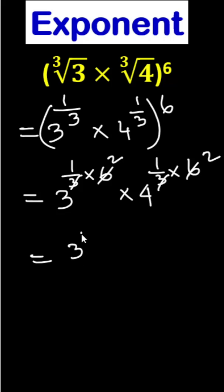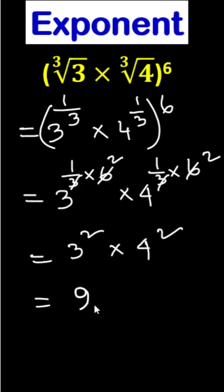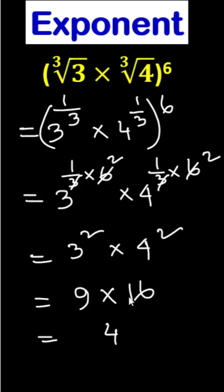So, here is 3 squared times 4 squared. So, 3 squared means 9 times 4 squared means 16. So, 9 times 16 equals 144, which is our answer.